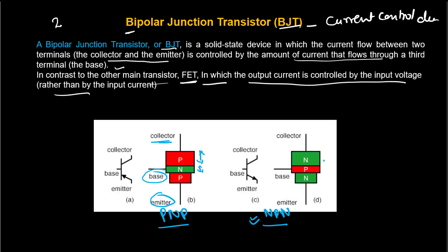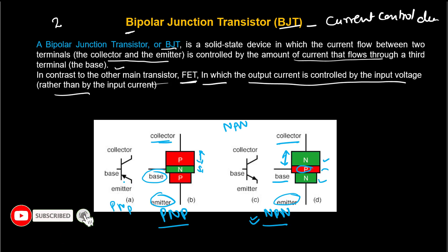In the NPN transistor, two N-regions sandwich a P-region. The middle region is our base. The upper, broadest region is the collector, and the moderate region is our emitter. To understand which transistor is PNP or NPN, we look at the arrow on the emitter. If the arrow points inward, it is called a PNP transistor. If the arrow points outward, it is called an NPN transistor.